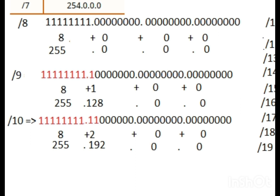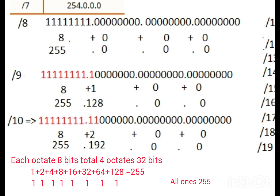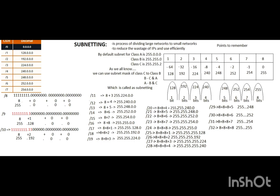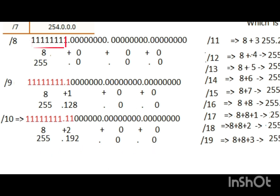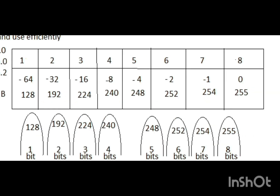First, slash 8. There are 4 octets. In the first octet, there are 8 bits all set to 1. 8 bits of 1s represents 255. The remaining octets are 0s. So the subnet mask value of slash 8 is 255.0.0.0.